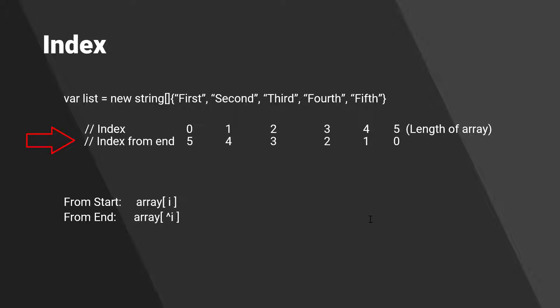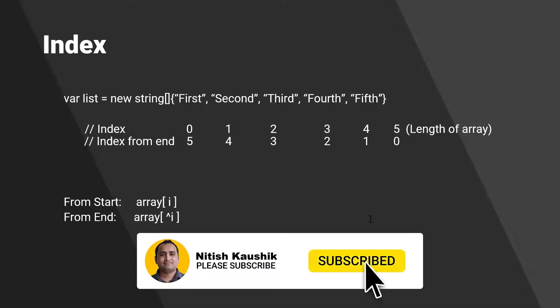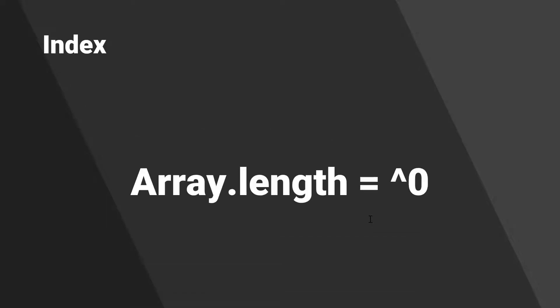Now let's talk about index from end. When counting from the end, it starts from one — the last element is ^1, then ^2, ^3, ^4, ^5. The ^0 represents the length of the array. So if you pass ^0, or equivalently array.length, into the array indexer, you will get an index-out-of-bounds exception.